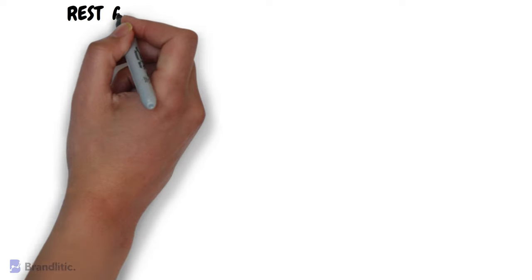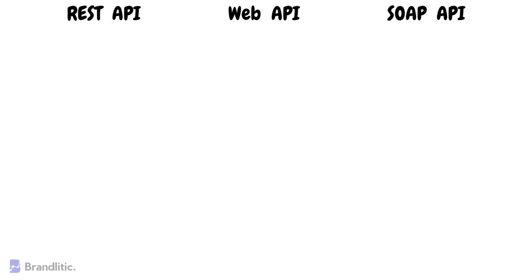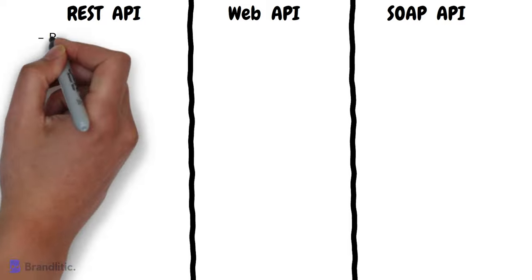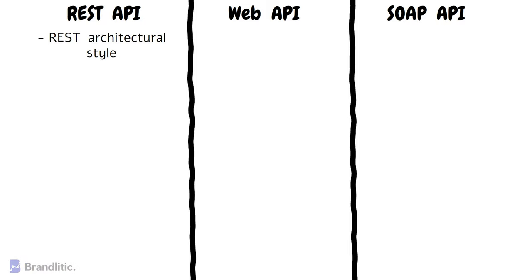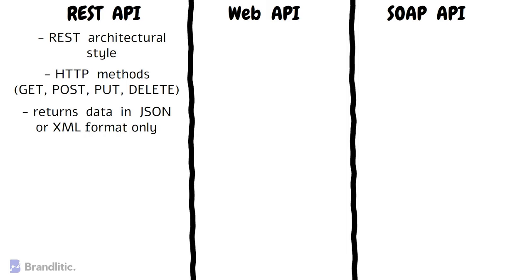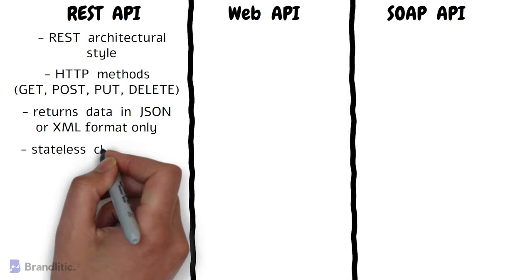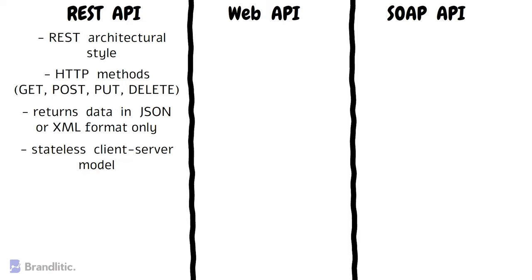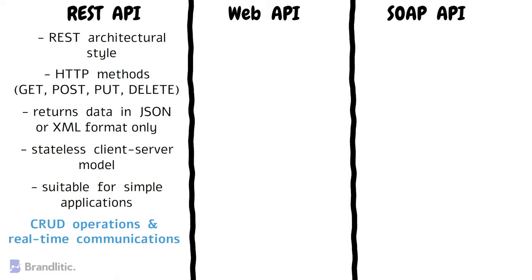Let's summarize the differences between REST API, Web API, and SOAP API. REST API follows the REST architectural style. It uses HTTP methods like GET, POST, PUT, and DELETE to perform operations on resources. It returns data in JSON or XML format only and follows the stateless client-server model. It is suitable for simple applications, particularly those that require CRUD operations and real-time communication.